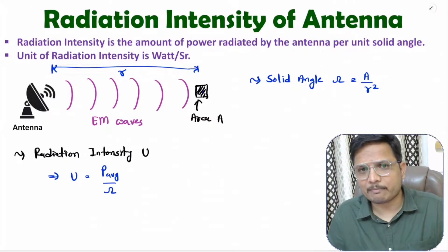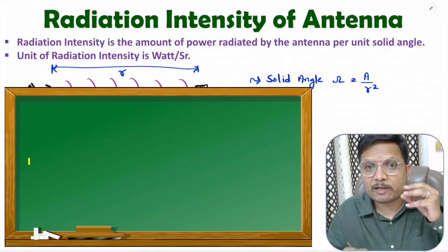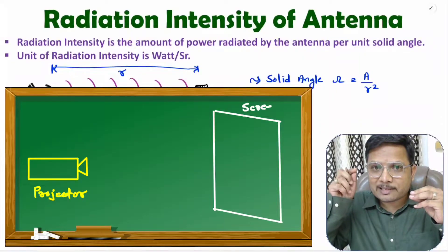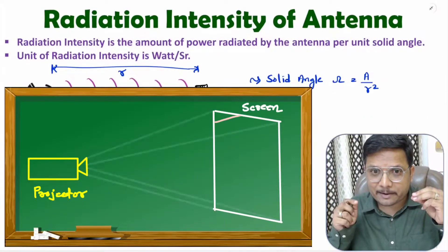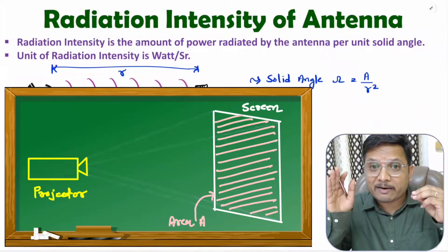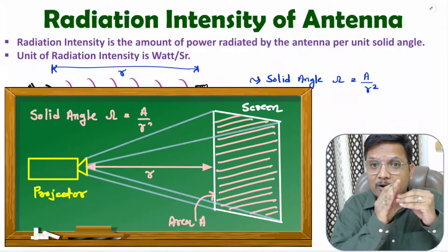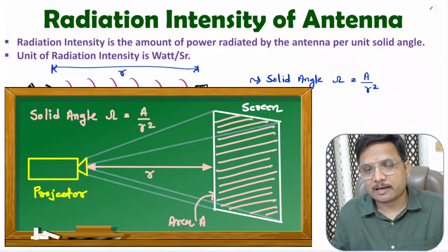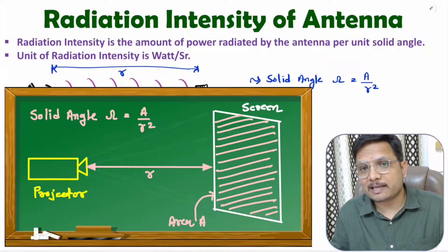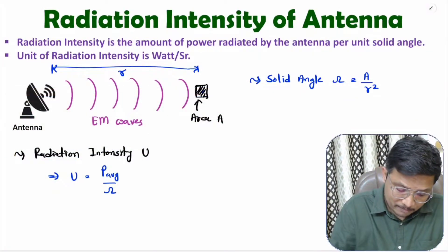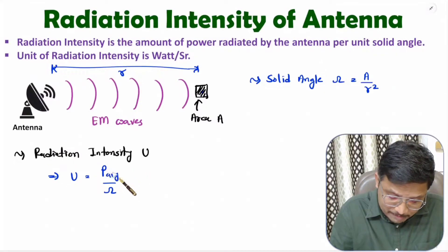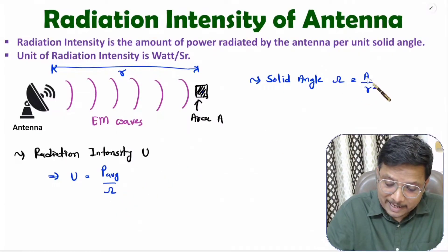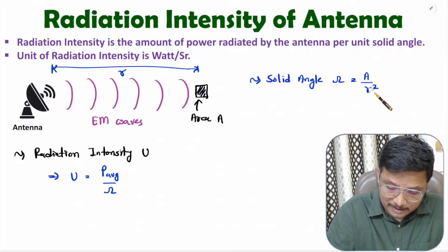Let me give an example. If you have a projector and you are projecting it on a screen, there will be an area on the screen. That area divided by the square of the distance of the projector will be the solid angle of the projector. So that is a three-dimensional angle. Radiation intensity is average power per solid angle, where solid angle is area divided by square of the distance.